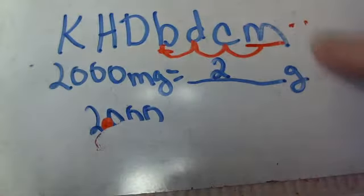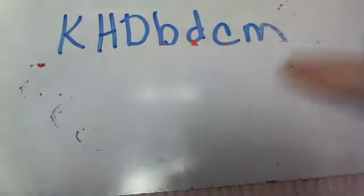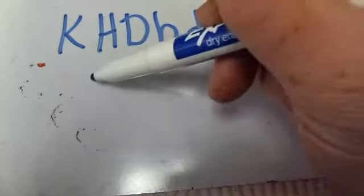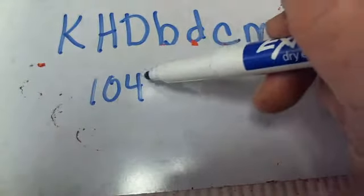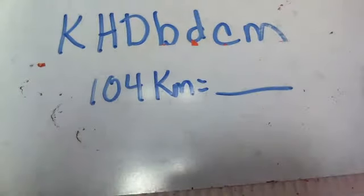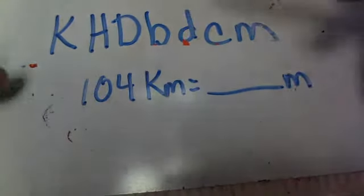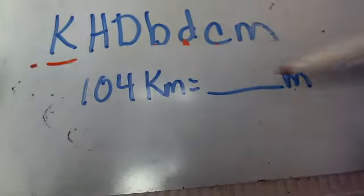I'm going to go ahead and do the next one, number 2. I'm going to use the same method because it gives me good results, and those are steps that I can follow every time. So number 2 says 104, 104 kilometers equals how many meters? So I'm going to do the same thing. What do I have? I have 104 kilometers, and I need to get to meters.